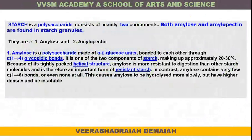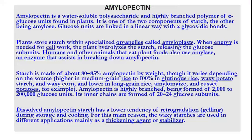Starch is a polysaccharide consisting mainly of two components: amylose and amylopectin, both found in starch granules. Amylose and amylopectin play a predominant role in the structure of starch granules. Amylopectin is a water-soluble polysaccharide and highly branched polymer of glucose units found in plants. It is one of the two components of starch, the other being amylose.